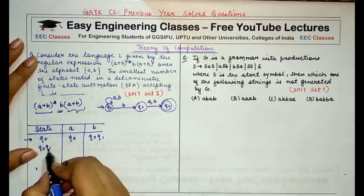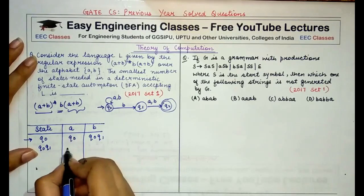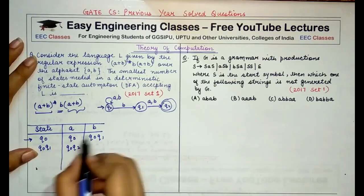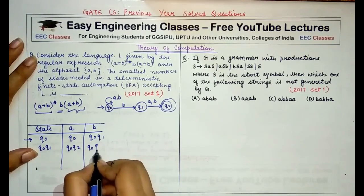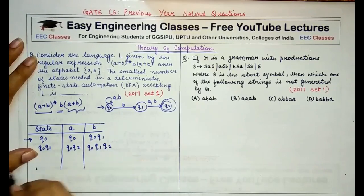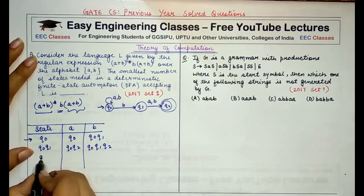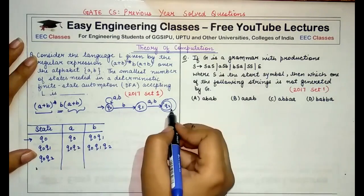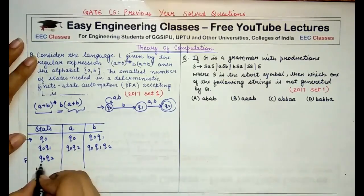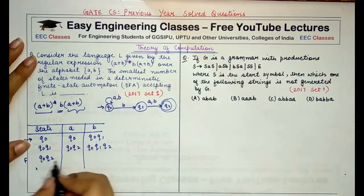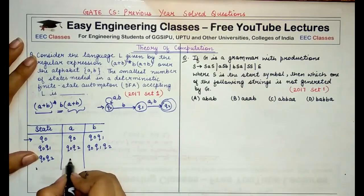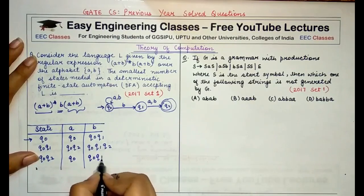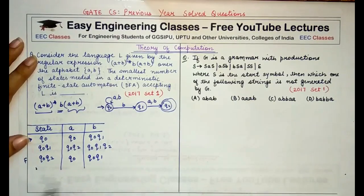From state {q0, q1} reading a, I go to {q0, q2}. From {q0, q1} reading b, I go to {q0, q1, q2}. Now from state {q0, q2} — since q2 is the final state, {q0, q2} becomes a final state. From {q0, q2} reading a, I go to {q0}, and reading b, I go to {q0, q1}.